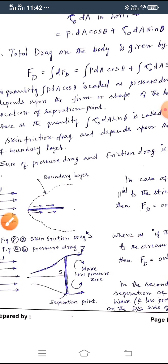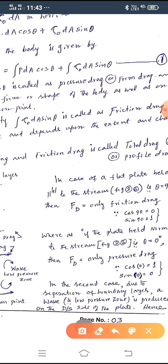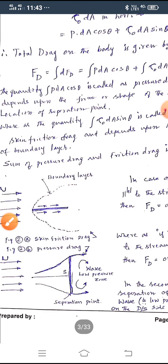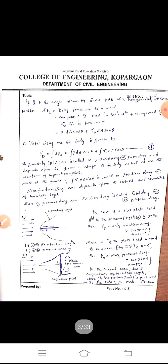Whereas, when the same plate is held perpendicular to the fluid flow, then we get pressure drag, see here, FD, pressure drag. In the latter case, that is, in the second case, due to the separation of boundary, when it is held perpendicular, there is a large wake or large pressure wave is formed.